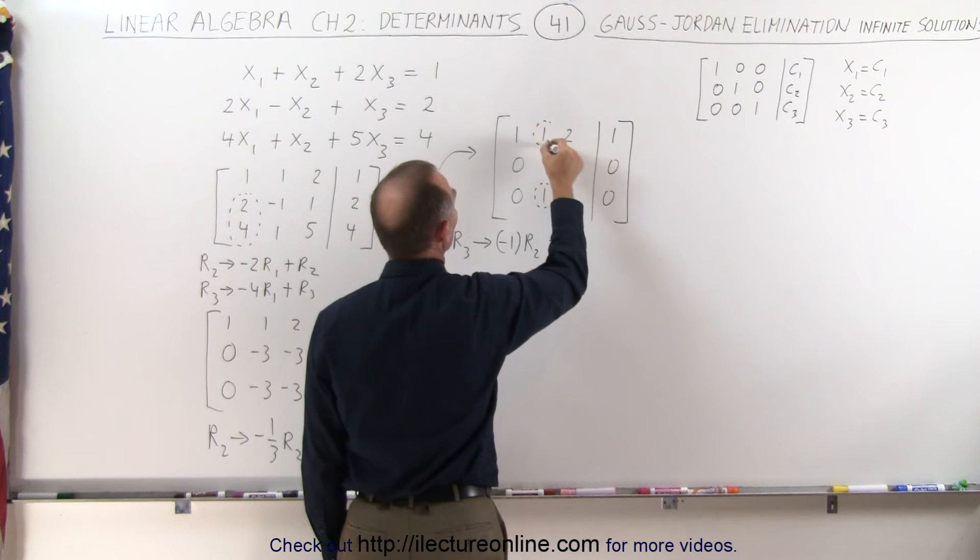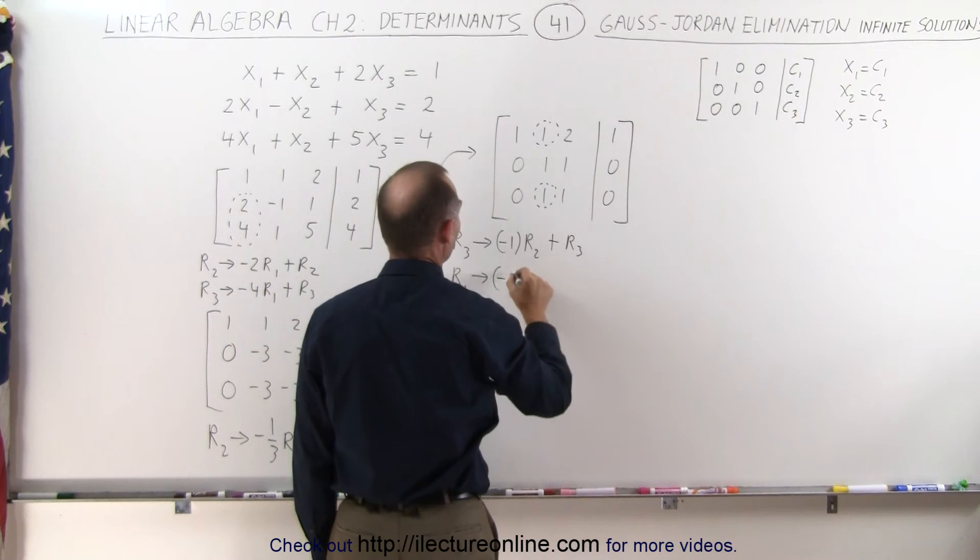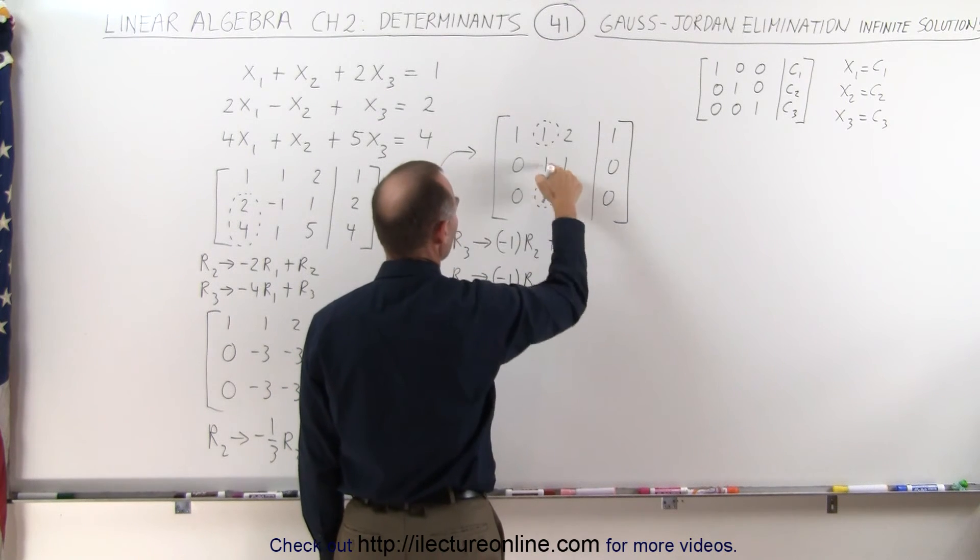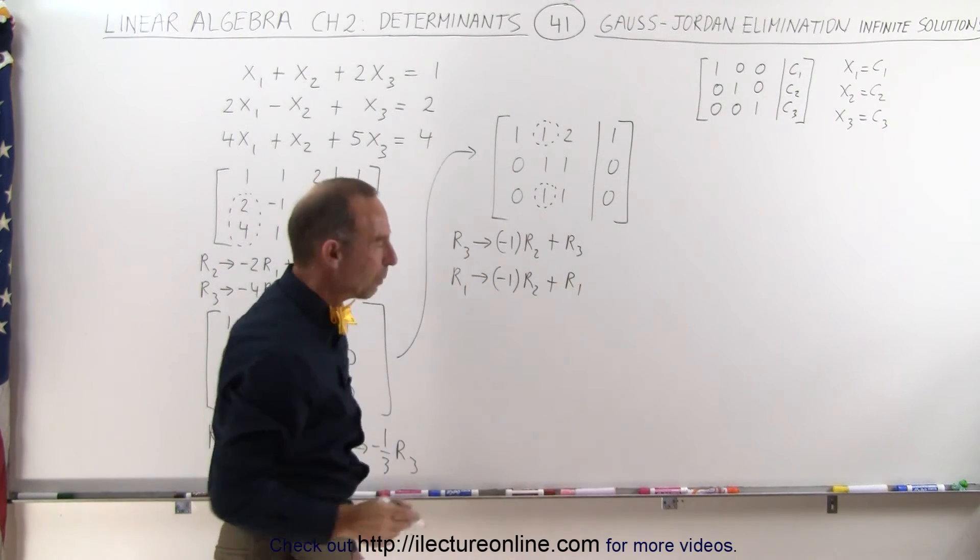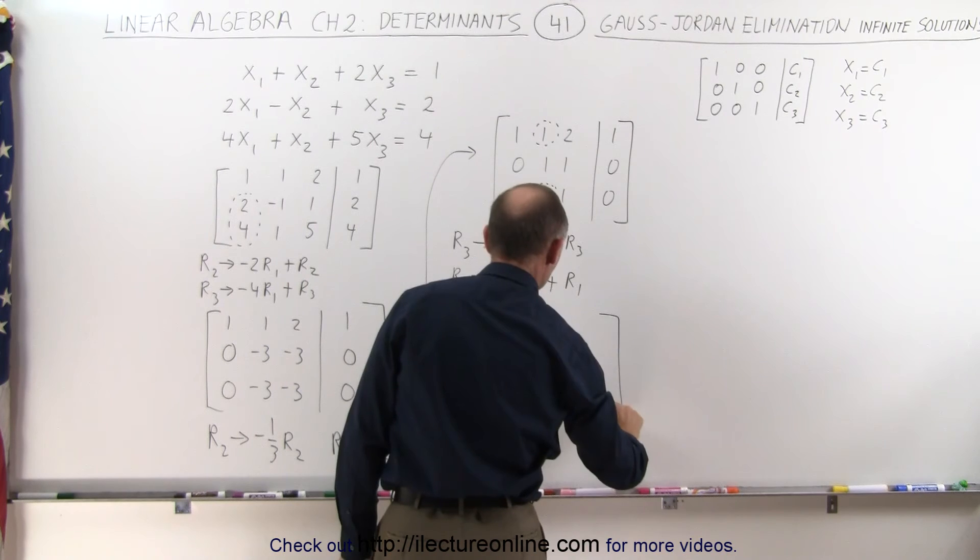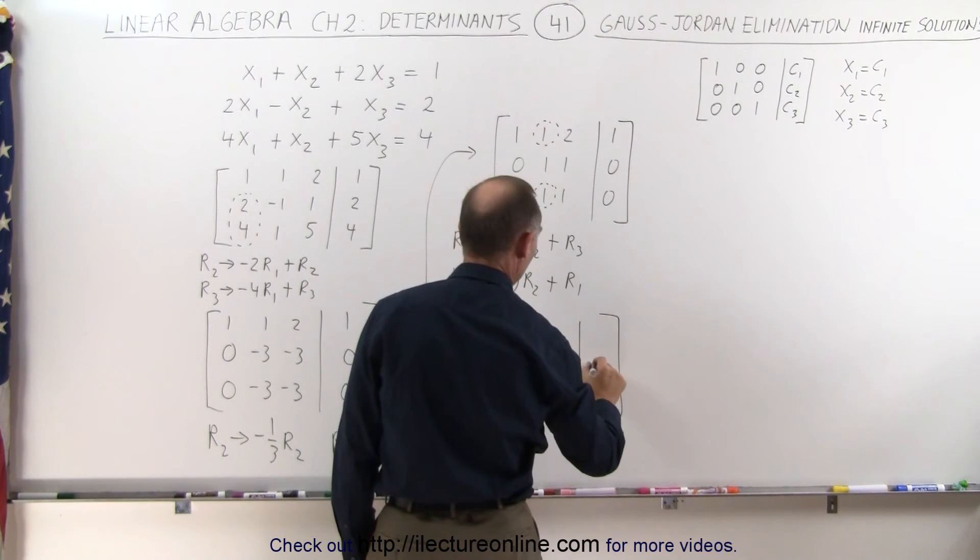And at the same time, we want to get rid of this as well, so we can take the first row and replace it by the negative of the second row, the one with the 1 in it, and adding it to the first row. Let's see what we end up with when we do that. Now, the row that doesn't change is the second row, so this becomes 0, 1, 1, 0.